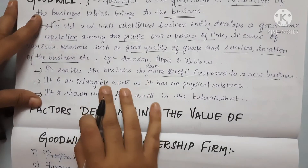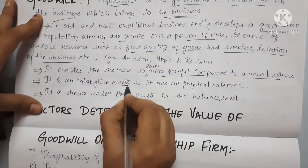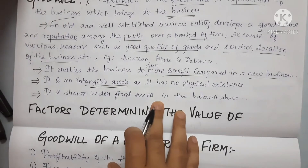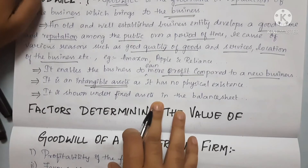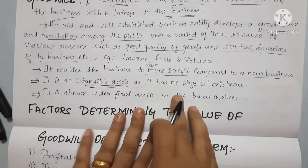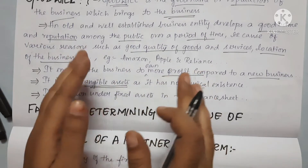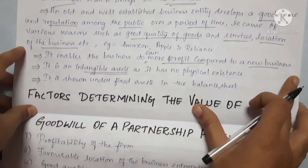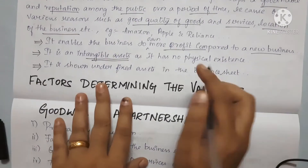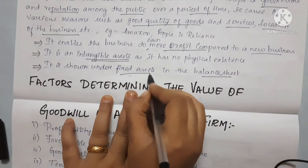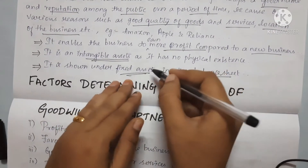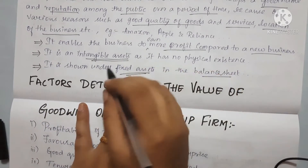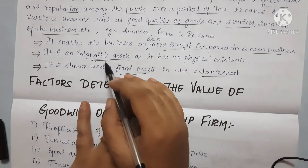How do we treat goodwill? Goodwill is an intangible asset. Intangible means you cannot touch and feel it — it has no physical existence. It is intangible. On the balance sheet, it appears as a fixed asset. Assets can be tangible and intangible; goodwill is intangible.